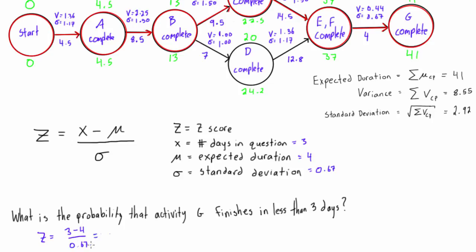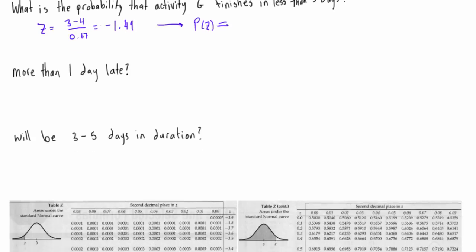You punch that into your calculator and you get a value of negative 1.49. Then we take the z-score and find out what the probability of this z-score is, so we go to the z-score table. You can find it in any statistics book, or just Google image search 'z-score table' and you'll come up with a ton of tables.